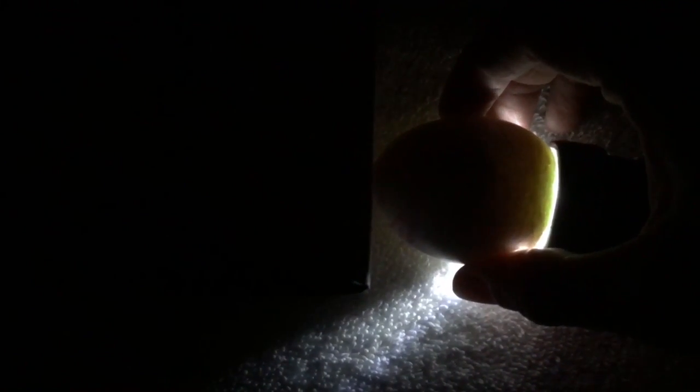Do we have movement in there? I think we might have a little bit of movement right there. I'm going to move that one out of the way so you can see what's going on there. Now this is a darker egg, this is the Moran. There is the air sac right there.